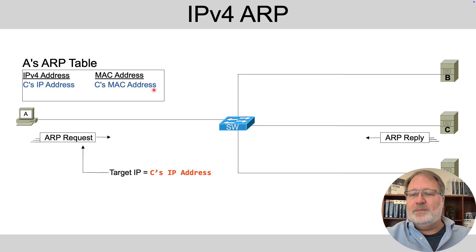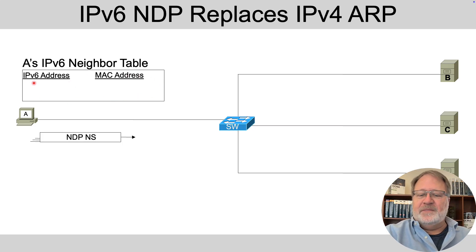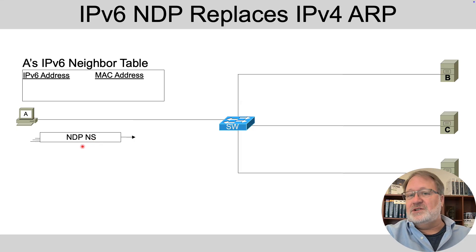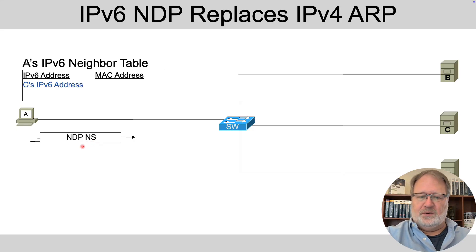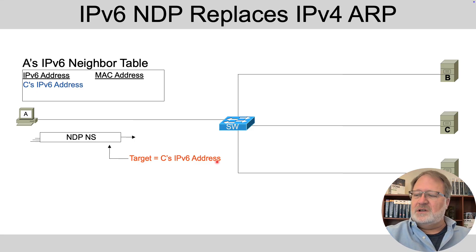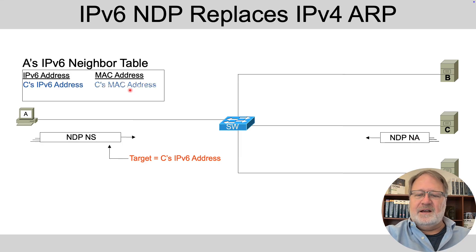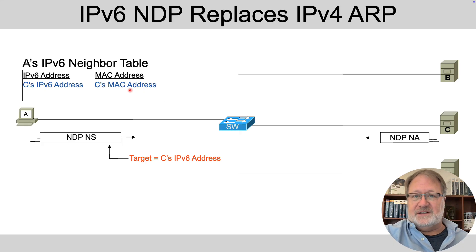A similar flow happens with IPv6 — it's just not ARP, it's Neighbor Discovery Protocol. With the table empty, A sends an NDP Neighbor Solicitation, soliciting the information. A wants to know C's MAC address, puts C's IPv6 address as the target, and sends the message. The switch delivers the message to host C. Host C sends a Neighbor Advertisement back, which contains the MAC address, so that host A can build its Neighbor table and have the correct MAC address to use.